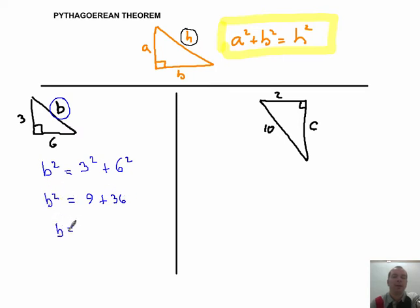And this is B squared. And now B is equal to the square root of nine plus thirty-six is forty-five. And therefore B is equal to six point seventy-one. I don't have any units so I'm just going to keep it at six point seventy-one.